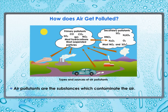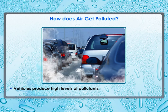The substances which contaminate the air are called air pollutants. Sometimes such substances come from natural sources like smoke and dust arising from forest fires or volcanic eruptions. Pollutants are also added to the atmosphere by human activities. Sources include factories, power plants, automobile exhausts, and burning of firewood and dung. Vehicles produce high levels of pollutants like carbon monoxide, carbon dioxide, nitrogen oxides, and smoke. Carbon monoxide is produced from incomplete burning of fuels such as petrol and diesel. It is a poisonous gas that reduces the oxygen-carrying capacity of the blood.